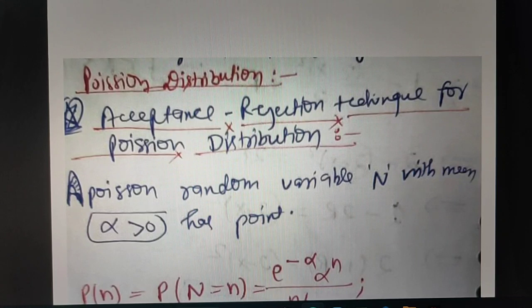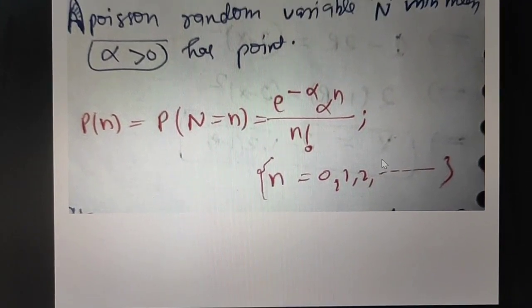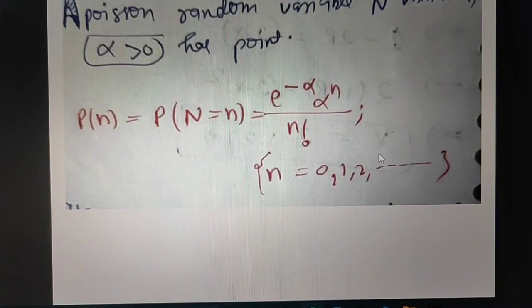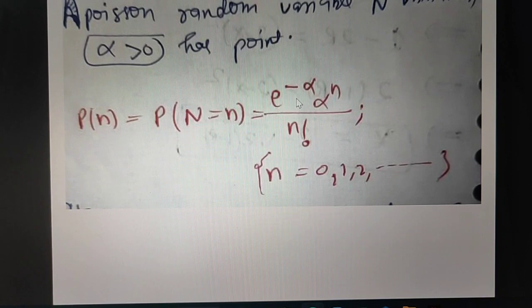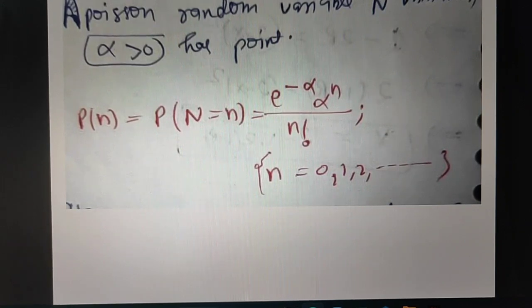We are well known this formula for Poisson distribution: when P where N equals capital N equals n, the formula states that e to the power minus alpha times alpha to the power n upon n factorial, where alpha is our mean. So this is a simple formula.